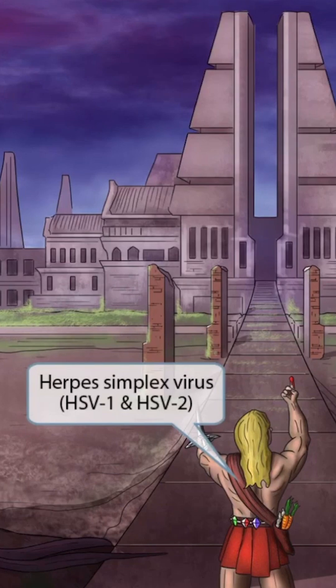Before we go much further, let's lay down a few ground rules for viruses in general. First, just like in our bacteria videos, we'll make all of the DNA virus images have a lot of dark colors, like blue and purple. Our RNA virus videos will have a lot of warm colors, like red, yellow, and orange. So, dark colors for DNA viruses and warm colors for RNA viruses.